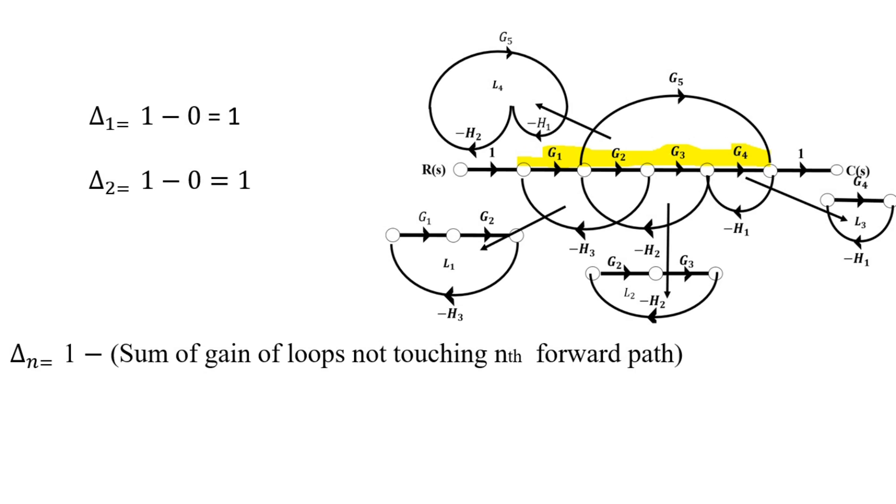So there is no loop which is not touching, so 1 minus 0 equals delta1. Same for delta2. All loops are also touching the second forward path, so delta2 will also be 1 minus 0, which equals 1.